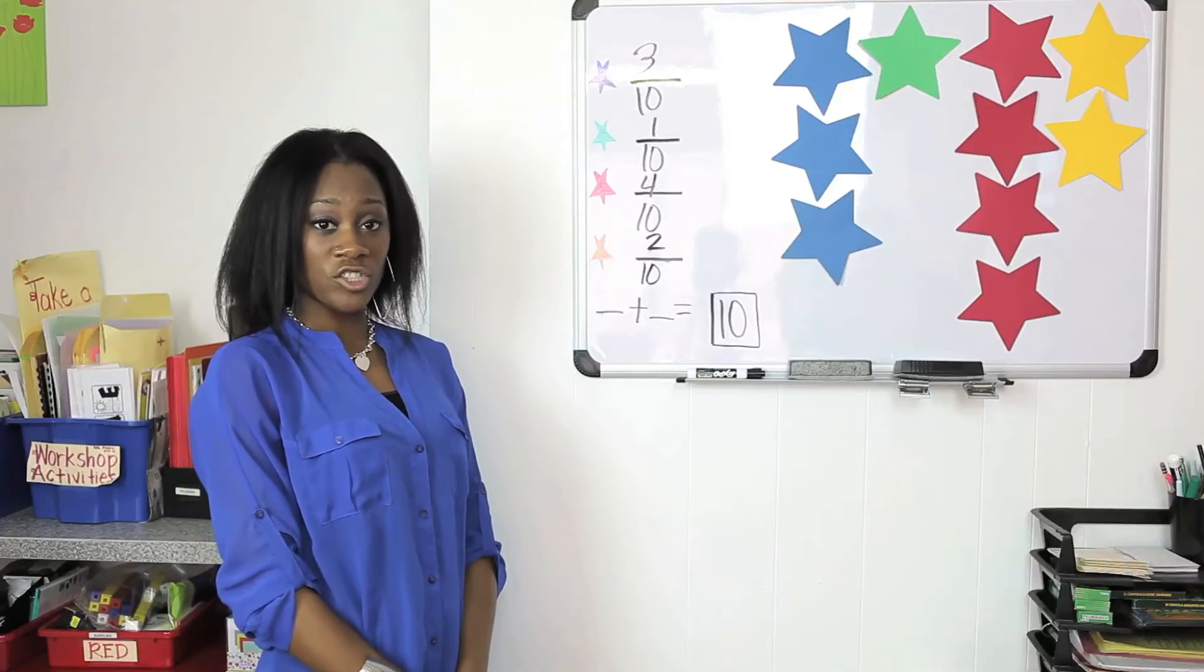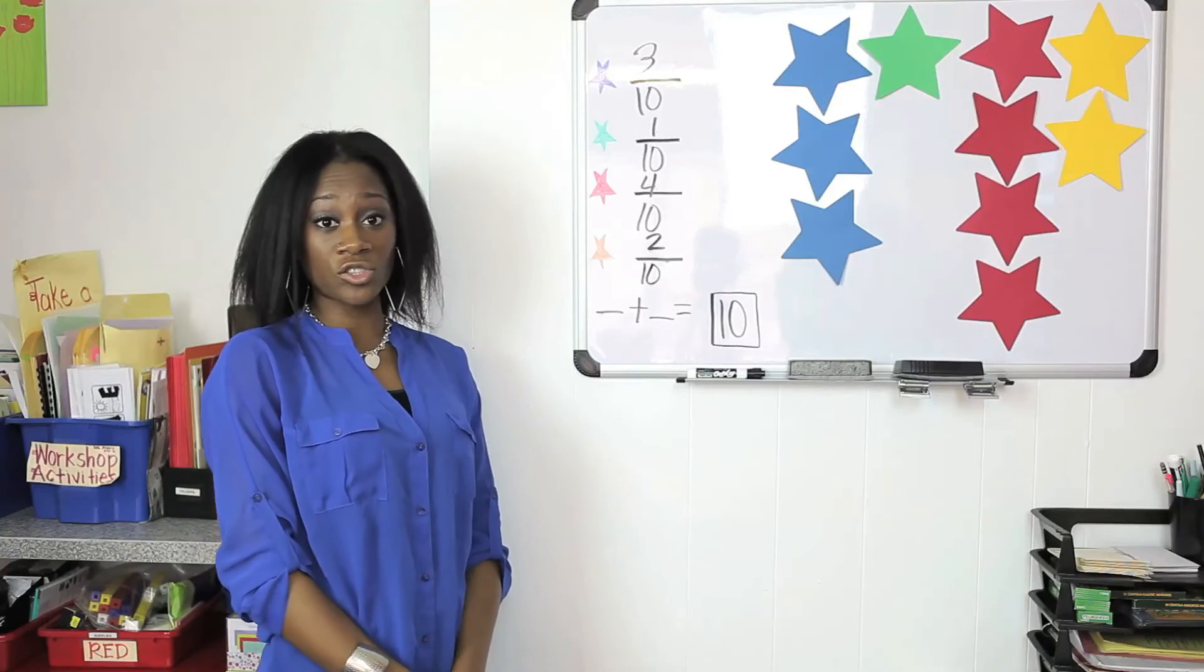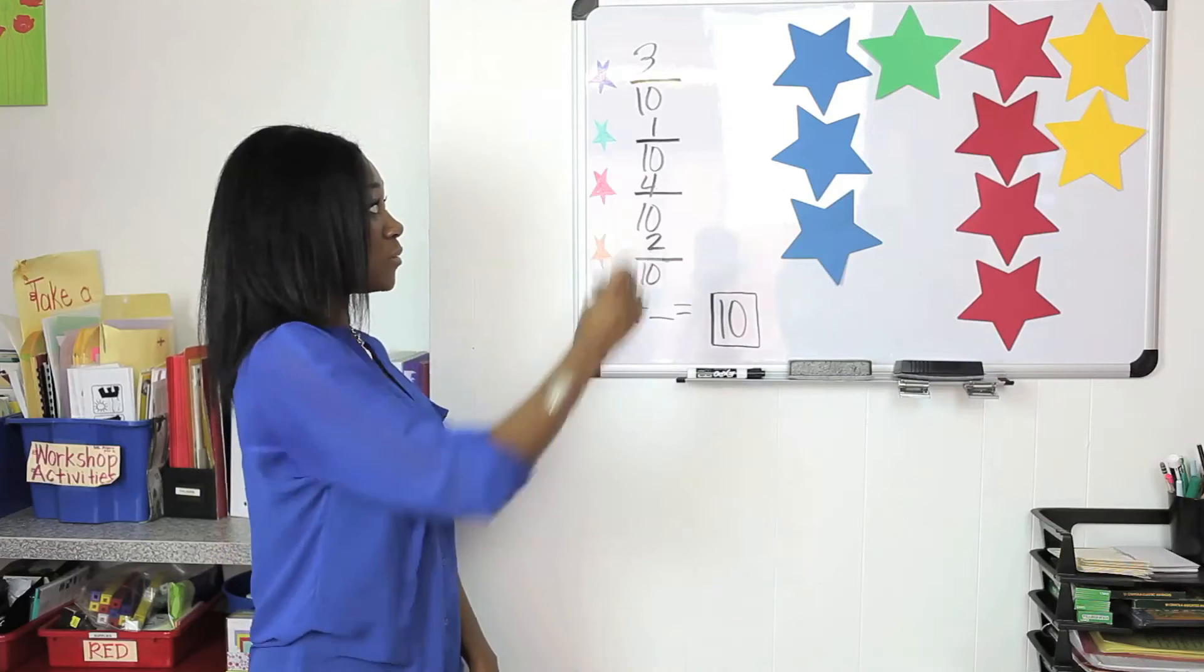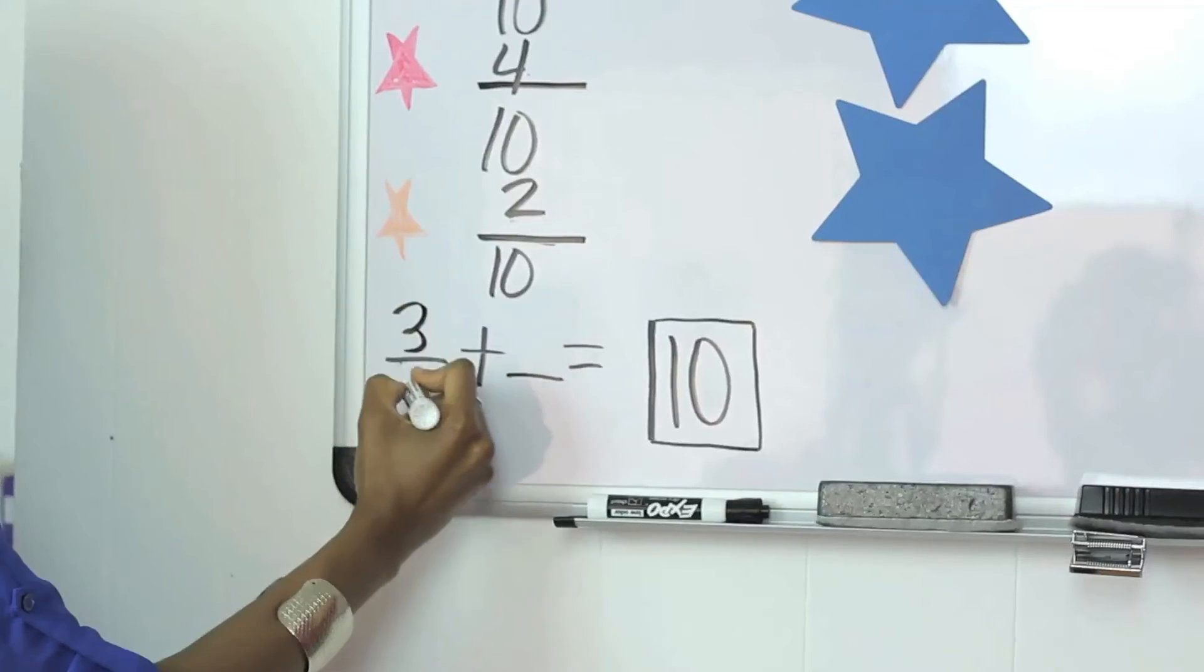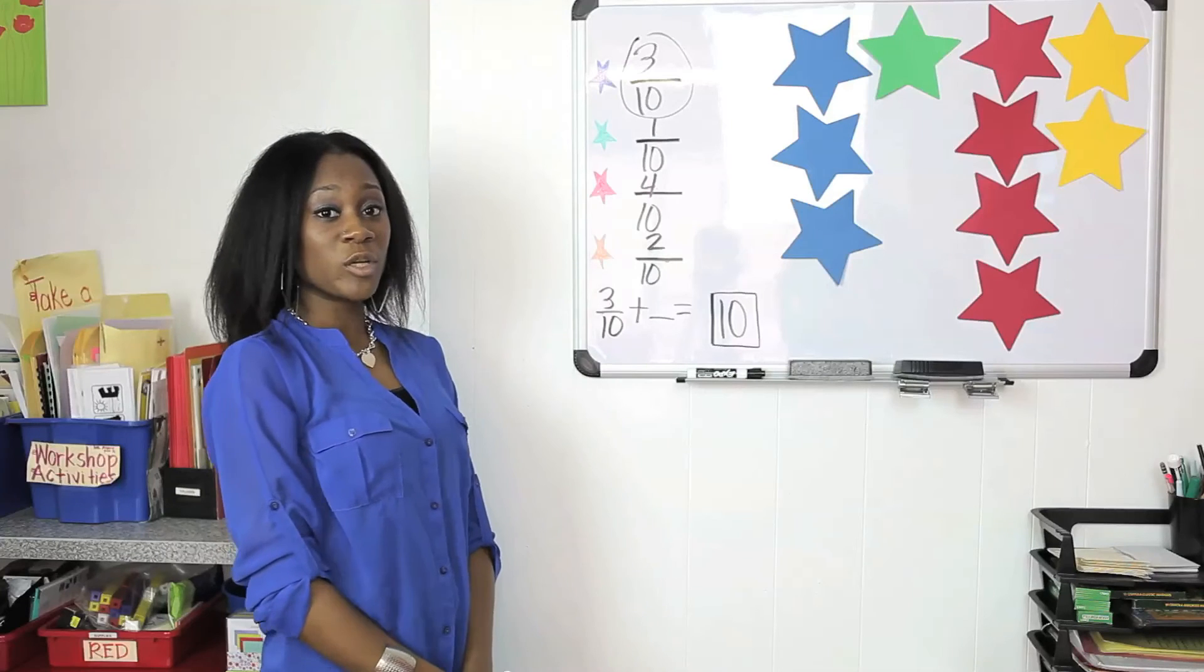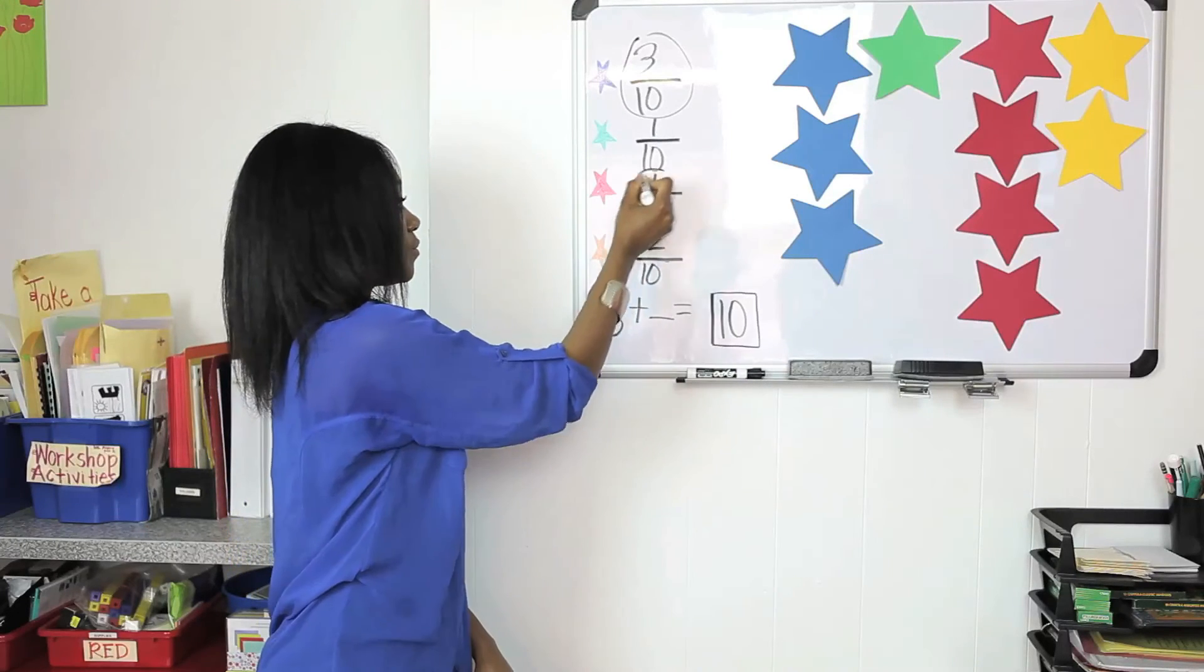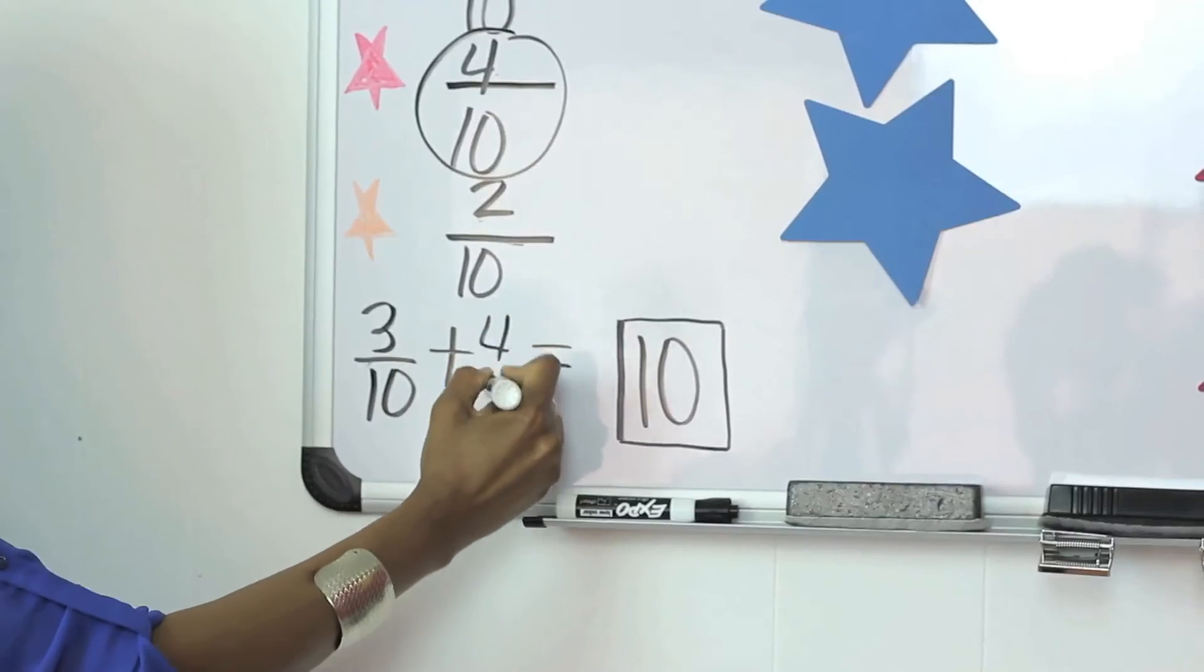Now to add the fractions, you're going to choose two different colored stars. Ask the students how many blue stars do they see? Which is three tenths. And how many red stars do they see? Which is four tenths.